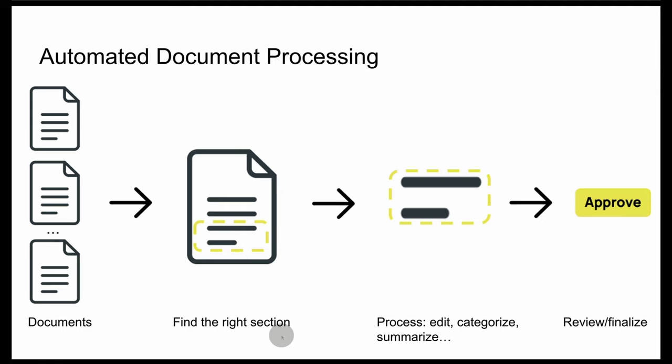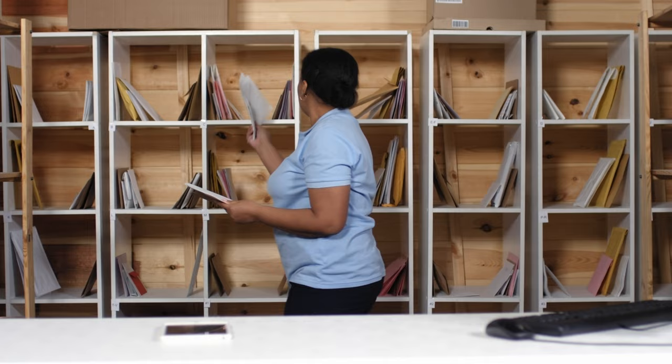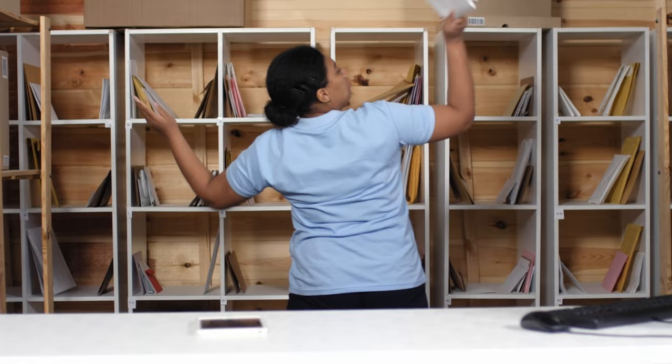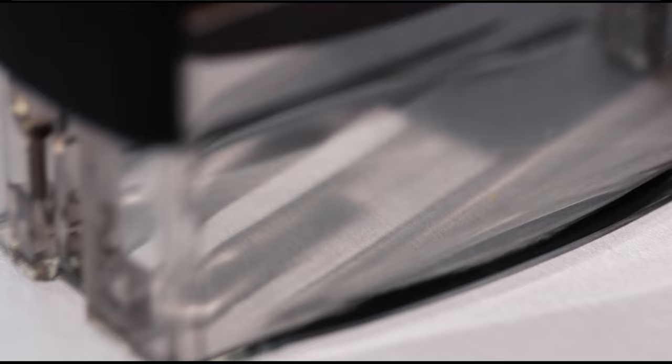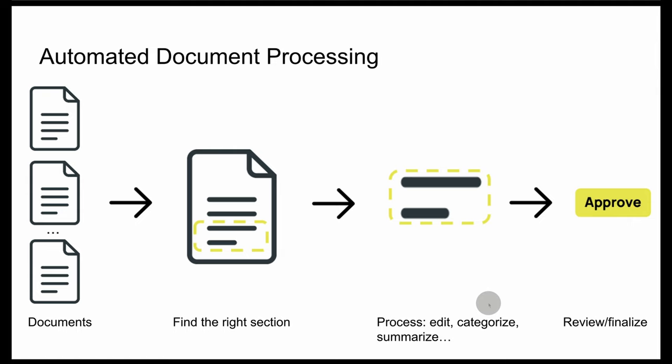Finally, we get to the meat of the work in the workflow, which is the process of editing, categorizing, and summarizing — basically doing whatever you need to do to the document. You can think of categorizing as sorting them. For example, trying to determine if an applicant is qualified, if this is a good sales lead, or if it represents an upsell opportunity for a customer conversation. And finally, there's some sort of review and approve process that happens at the end.